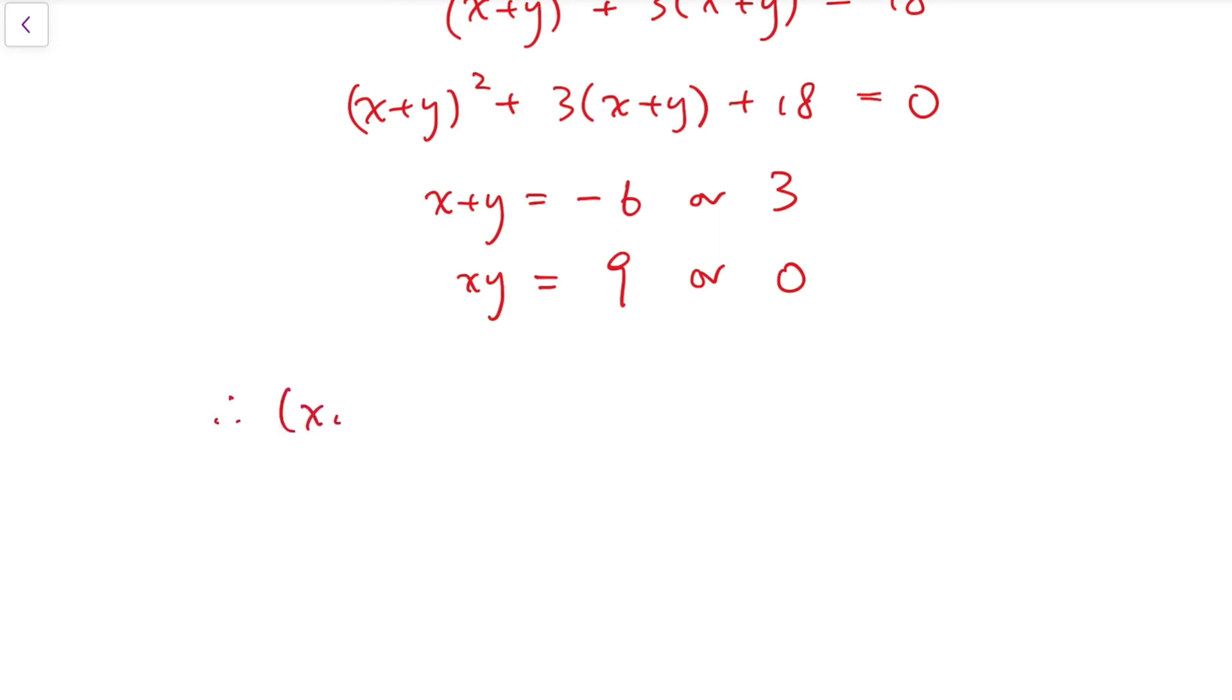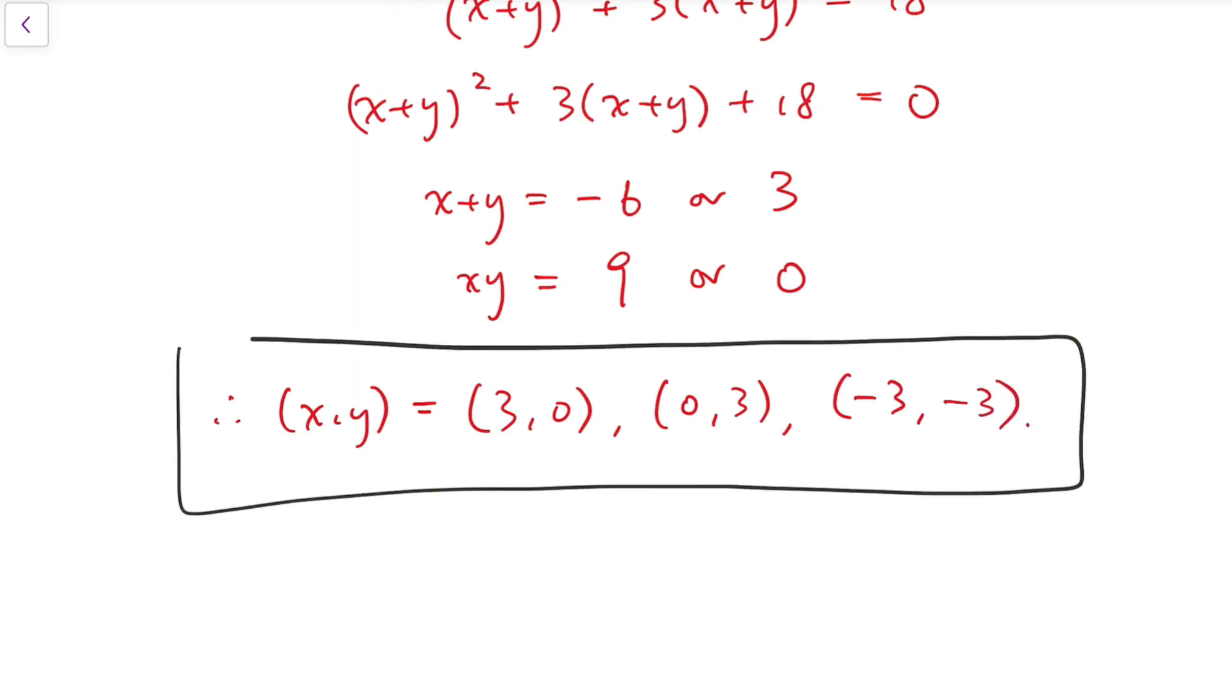And so altogether, we can say that (x, y) is either (3, 0), or (0, 3), or both equal to -3. So this is the final answer. Please feel free to share your ideas in the comments. Thank you for watching. See you next time.